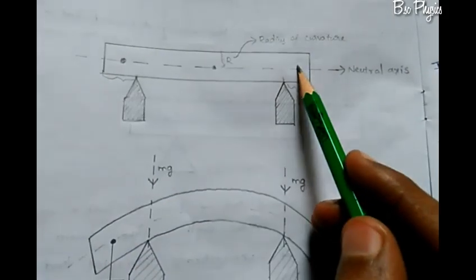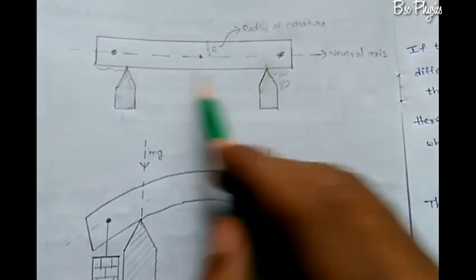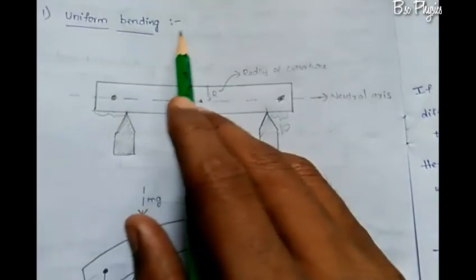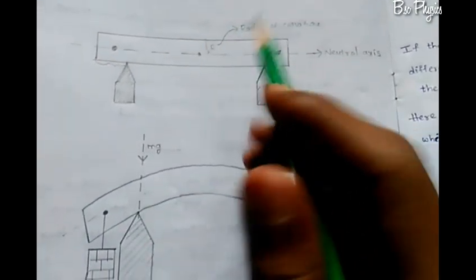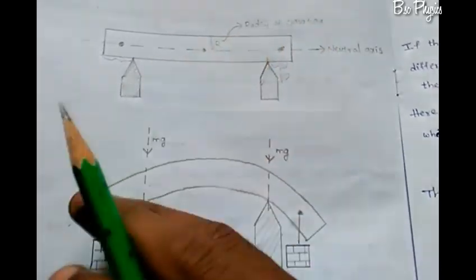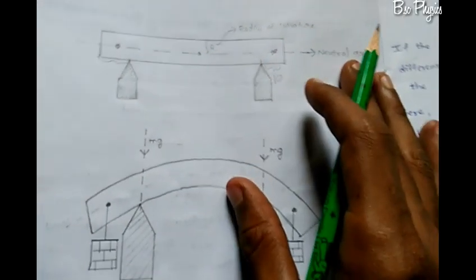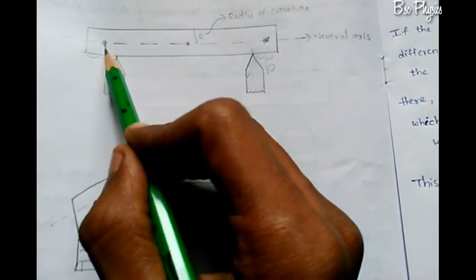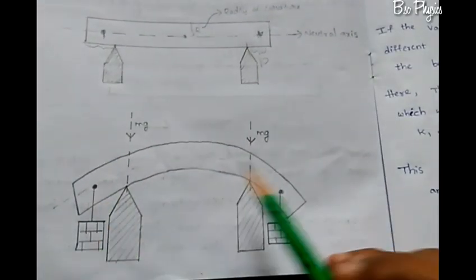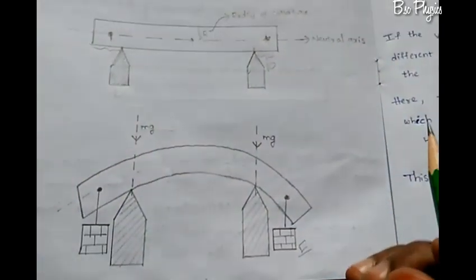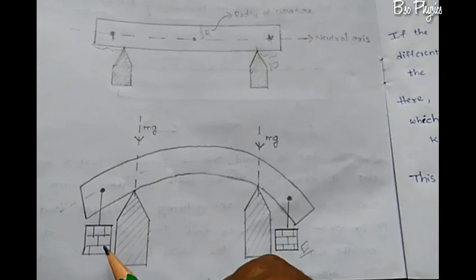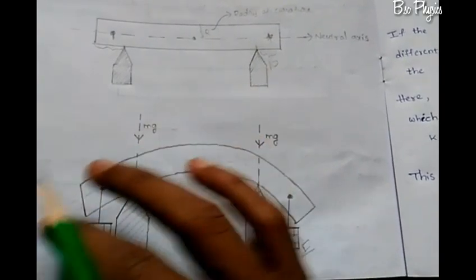Now, we apply weight to the simple beam to create torque. Equal weights are applied, producing equal and opposite forces. We apply the load and the beam bends. We convert the weight into force and apply the bending load.